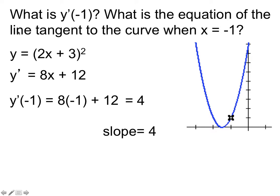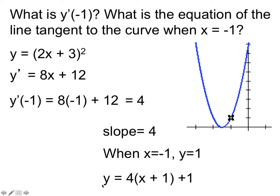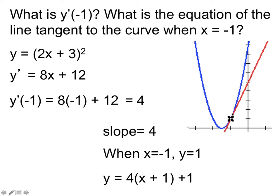To write an equation of a line we need its slope and a point. The slope is 4. When x is negative one, y equals (2 times negative 1 plus 3) squared equals negative 1 plus 3 equals 1 squared, so y equals 1. In point-slope form, the equation is y equals 4 times (x minus negative 1) plus 1, giving the tangent line. On the graph, going up 4 and over 1 confirms the slope of 4.